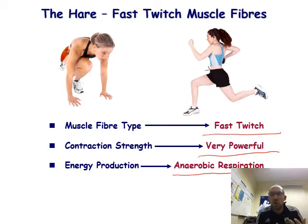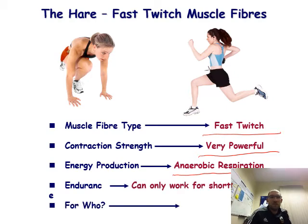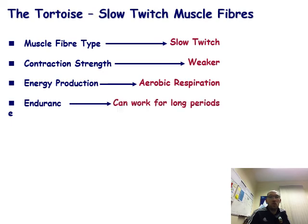Fast twitch fibers have very short endurance — you can't keep going for long. In an exam, if asked which sporting activity fast twitch fibers suit, say the 100-meter sprint, not football — because football involves walking and breaks. We're looking for short, full-speed activities. Slow twitch fibers have weaker, slower contractions but can last for long periods, using aerobic respiration — which uses oxygen.